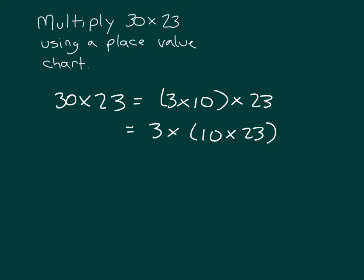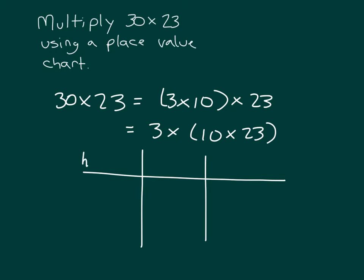Let's see what this looks like within a place value chart, where we have hundreds, tens, and ones. We have 3 times 10 times 23, so we'll take care of 10 times 23 first.